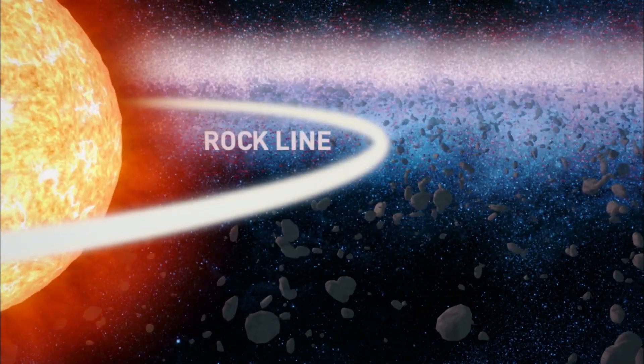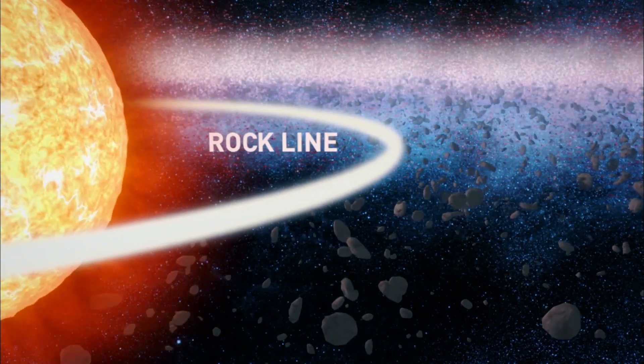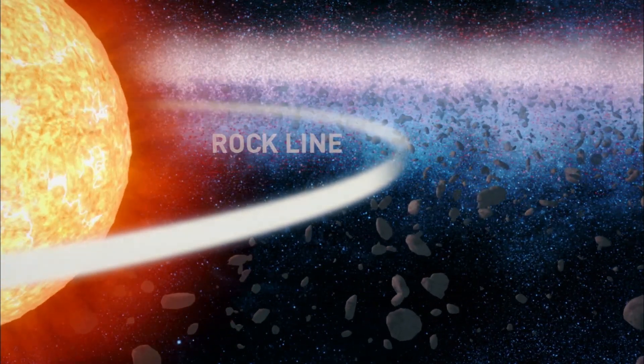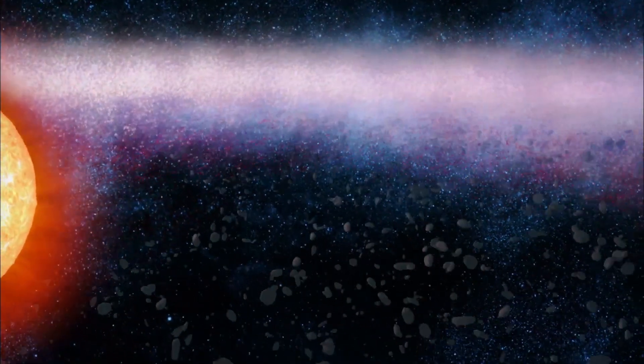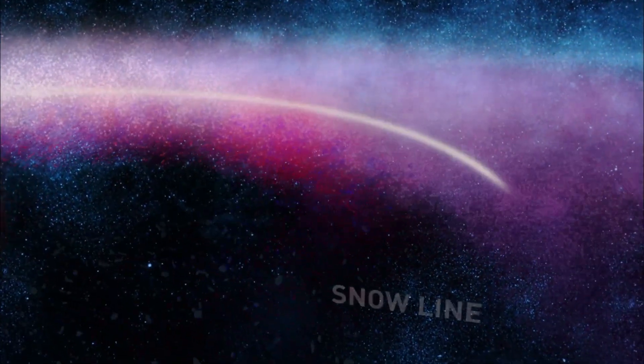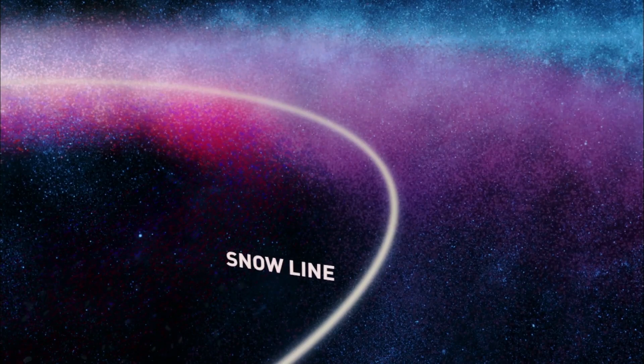The inner zone is filled with small chunks of rock, but outside the boundary known as the snow line, there are also ices of methane, ammonia, and water, which dominate the outer disk. And for good reason.